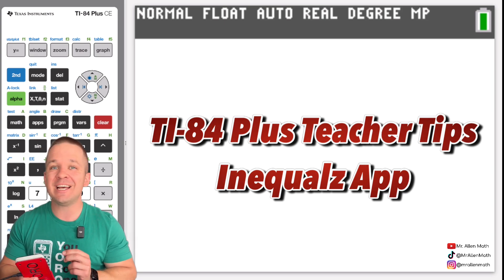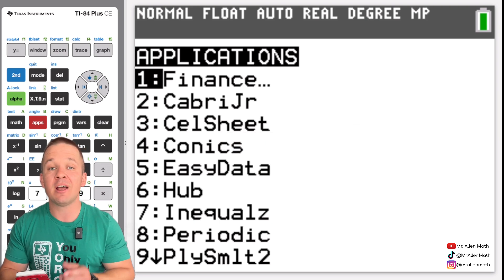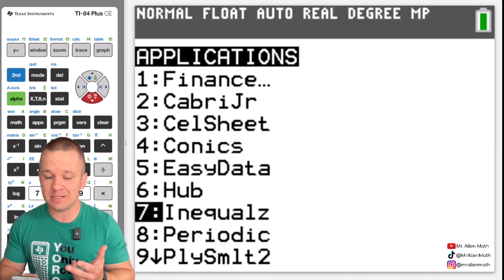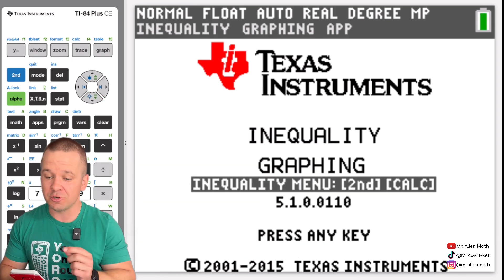So the first thing we're going to do is hit the apps button on our calculator and it's option number seven. So arrow on down to that or just hit seven, enter, and then you're going to have to enter one more time.